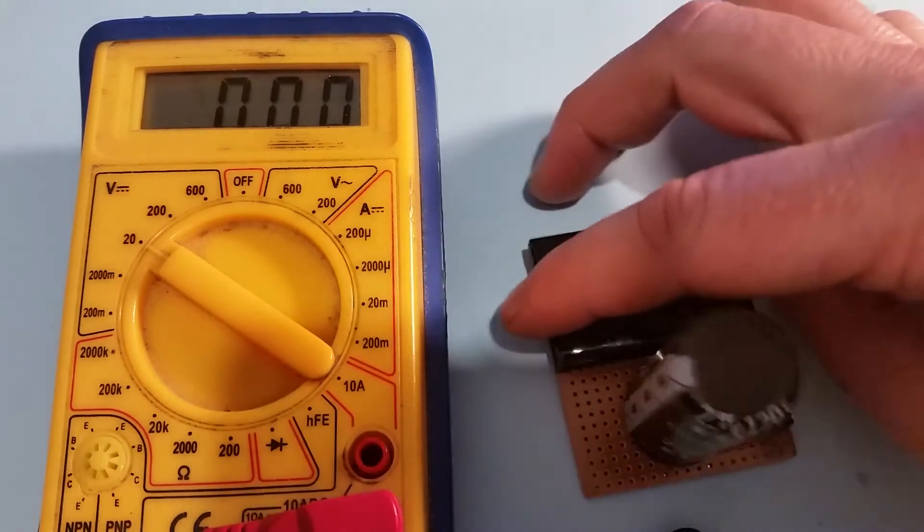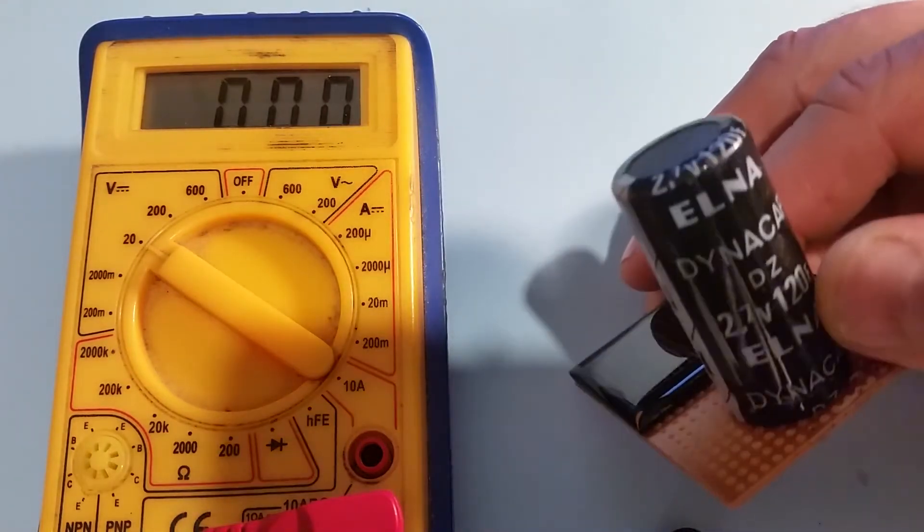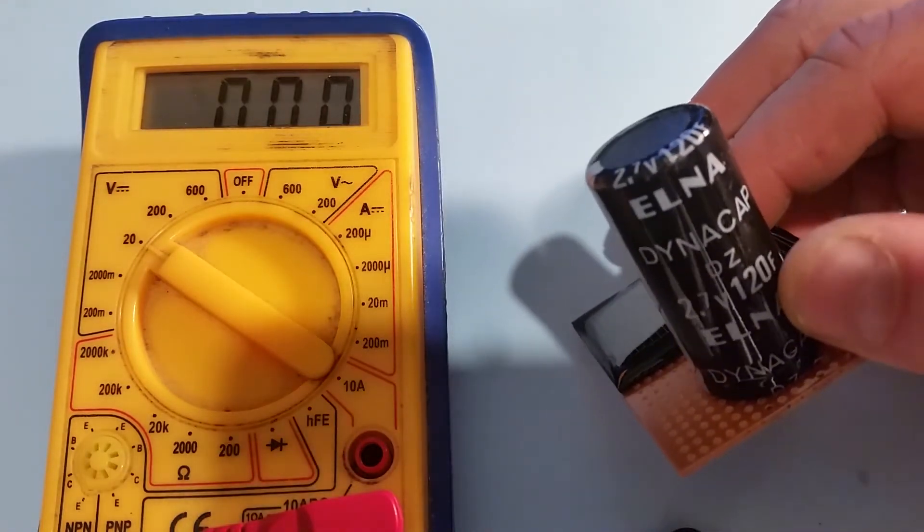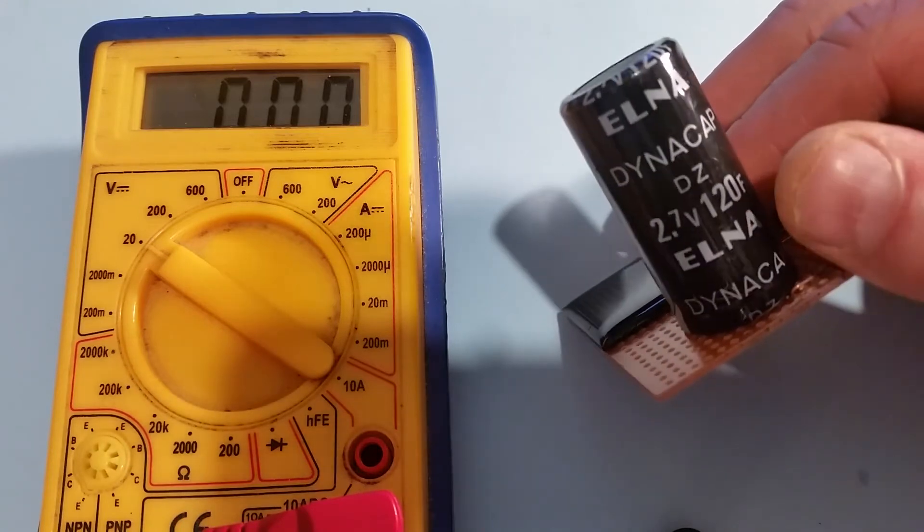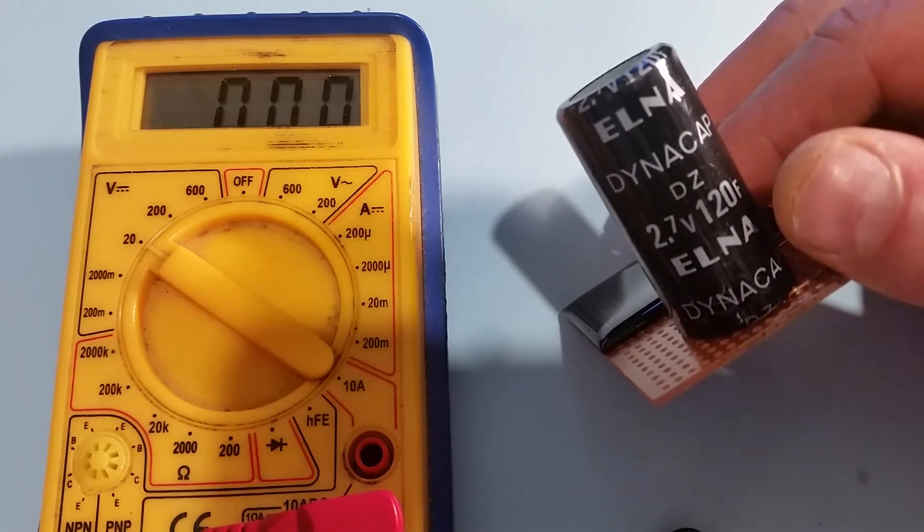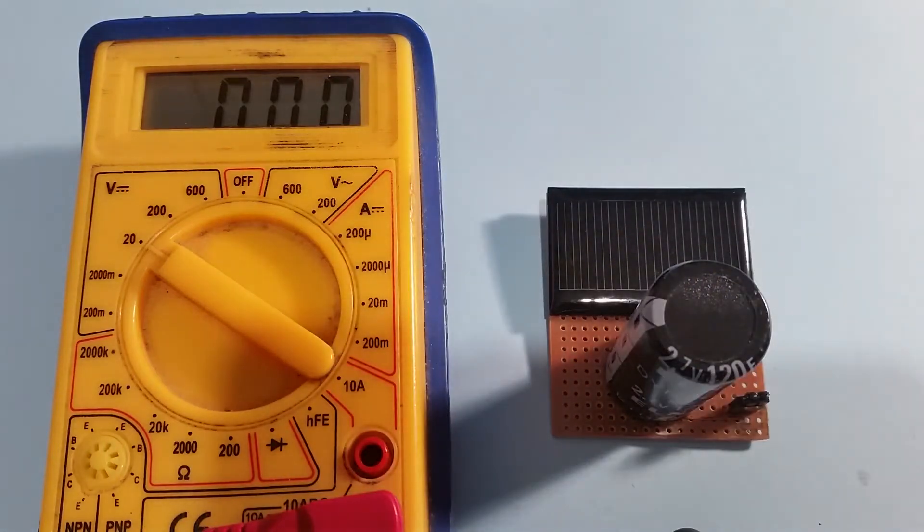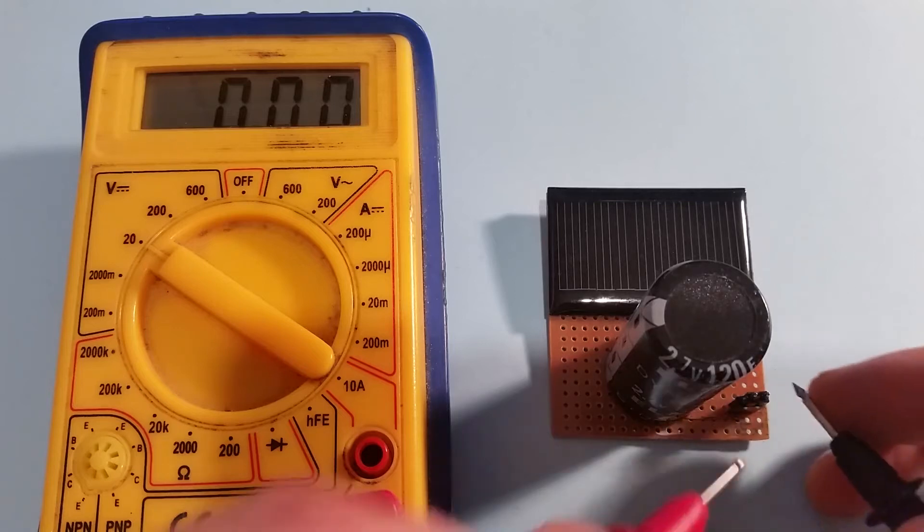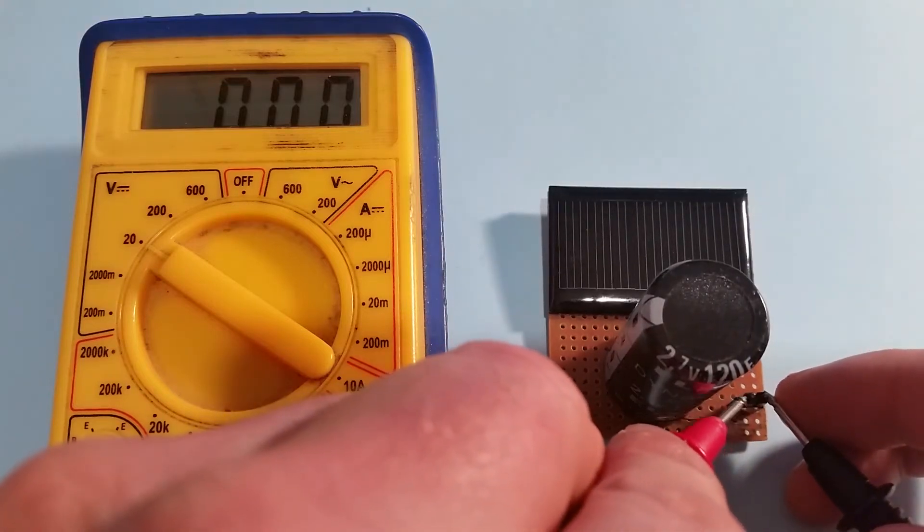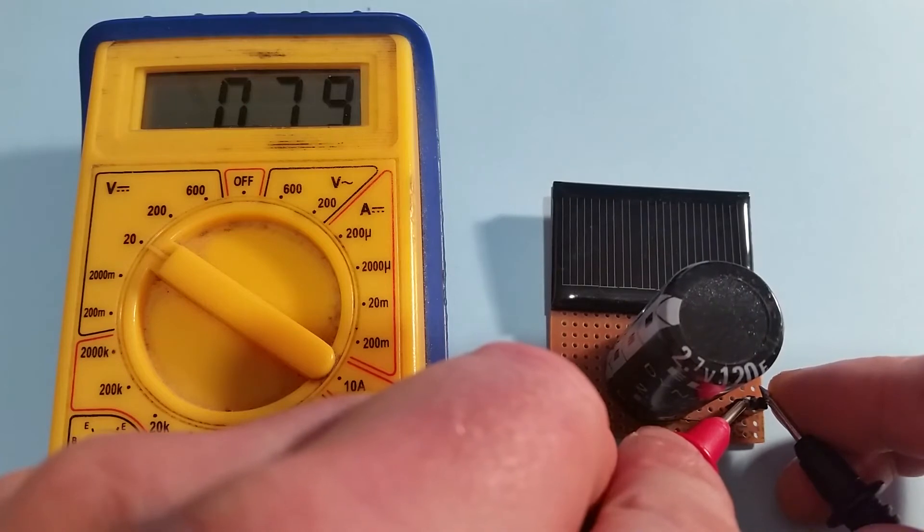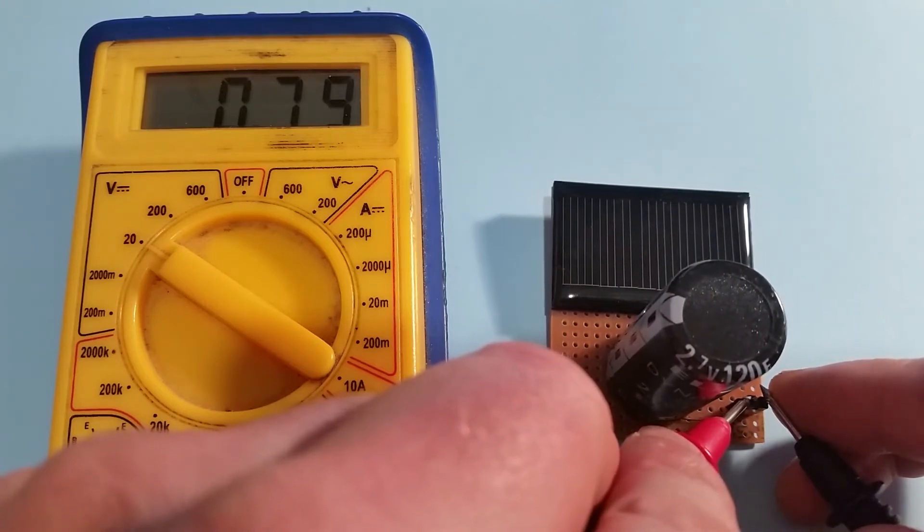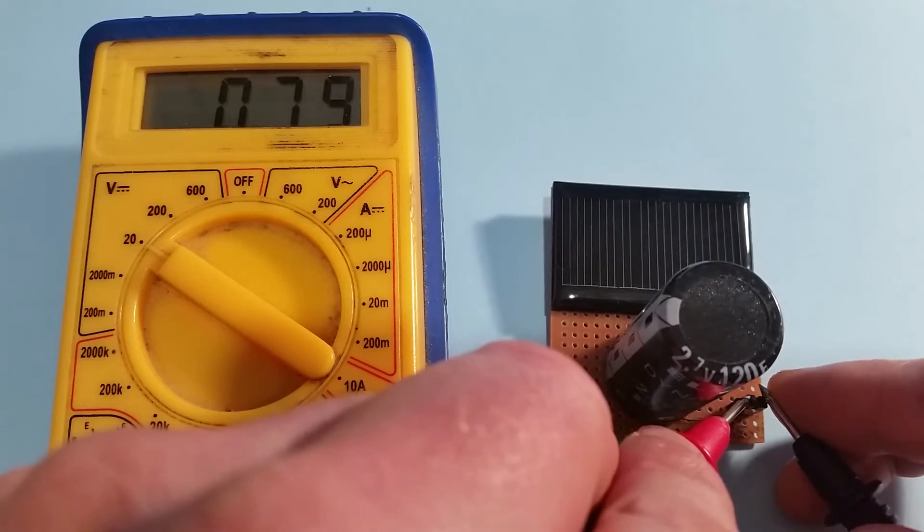So next is this bigger capacitor. This is Elna Dynacap, 2.7 volts again, 120 farad. And this one, because it's only on a small solar panel, didn't charge up fully yesterday. It only charged up to 1.15 volts. So see how well this has maintained its charge. This is down to about 0.8 volts, so it's lost about 0.4 of a volt in about a day.